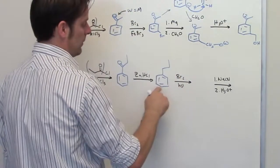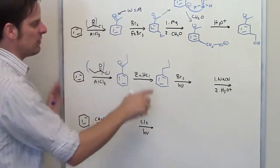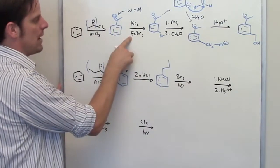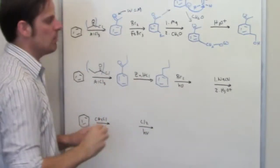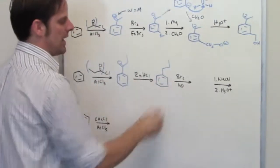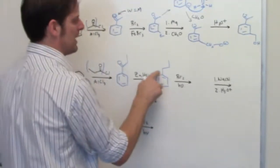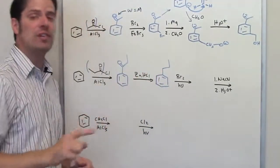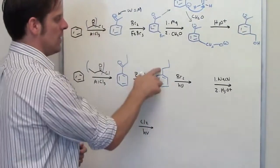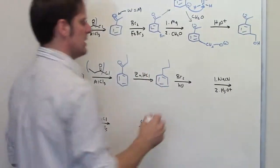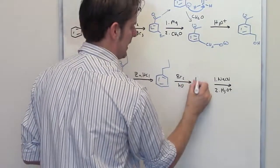Now I take this molecule and treat it with bromine and light. Remember, this is different from bromine and iron bromide — Br₂ and iron bromide places bromine on the ring, while bromine and light (also NBS and light) places a single bromine at the benzyl carbon. That benzyl carbon has at least one hydrogen on it, so running this through the sequence gives the benzylic bromide product.